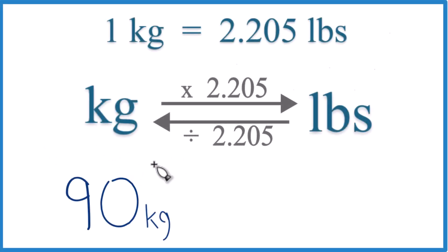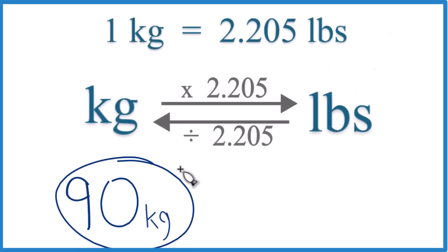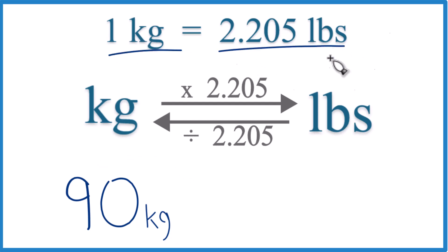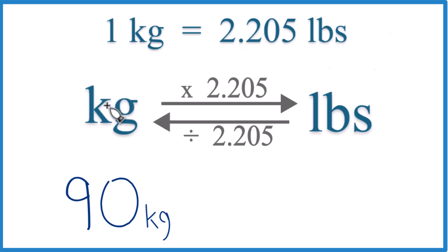Here's how you can convert 90 kilograms to pounds. The first thing you need to know is that one kilogram equals 2.205 pounds. We call this a conversion factor — you need it when you go from kilograms to pounds, or pounds to kilograms.